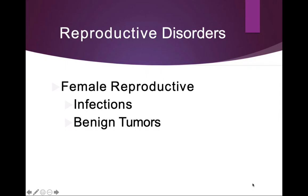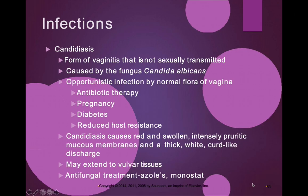Let's take a look at some infections and some benign tumors. First, let's look at candidiasis. This is a form of vaginitis that is not sexually transmitted, and it's caused by the fungus Candida albicans. That should sound a little bit familiar — we talked about Candida of the mouth.